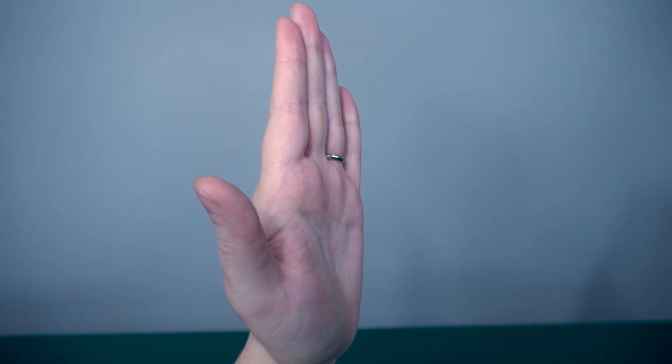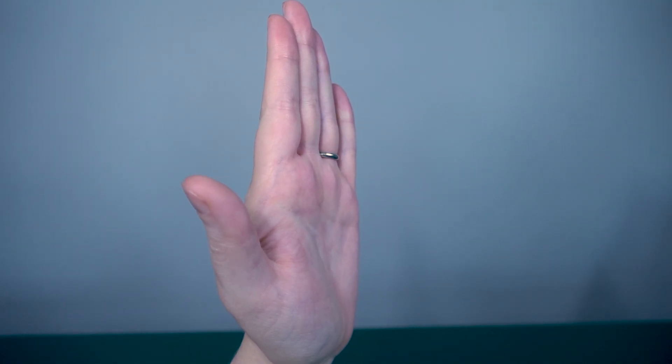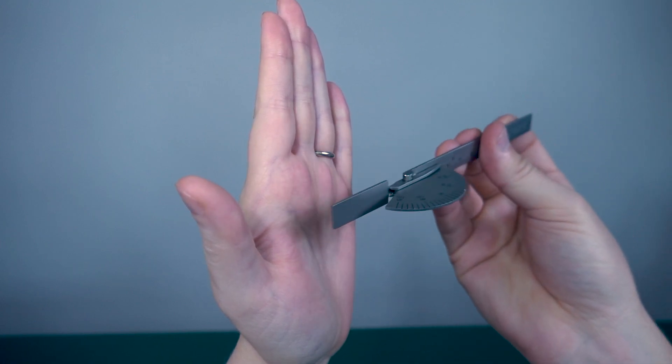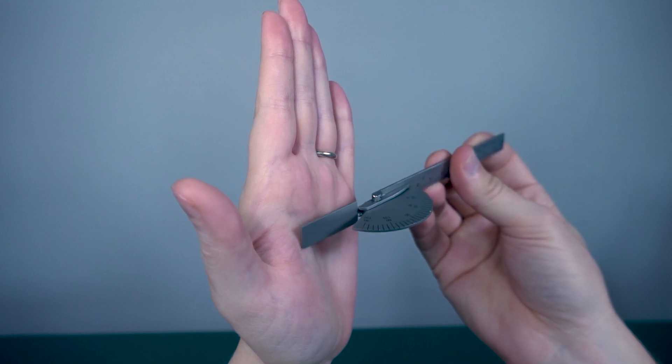Measuring MCP hyperextension. Patient position will be seated with their elbow resting on a table or solid surface with their hand extended upward. Just like with flexion, you're going to place the goniometer's stationary arm on the desired metacarpal.